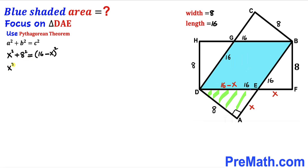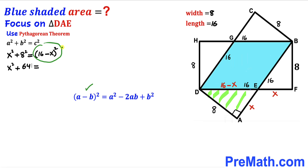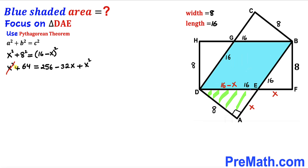Simplifying: X² + 64 = 256 − 32X + X². The X² terms cancel on both sides. Moving 64 to the right and −32X to the left gives 32X = 256 − 64, so 32X = 192.